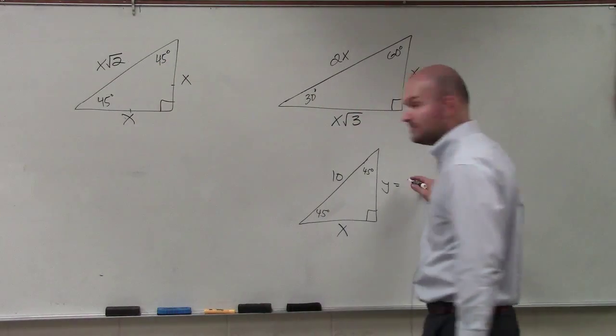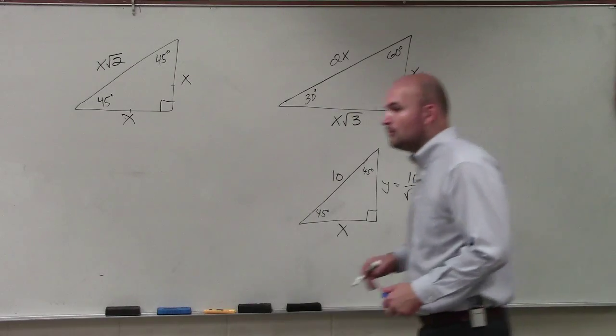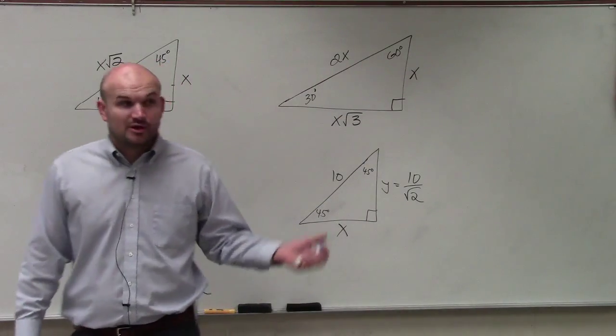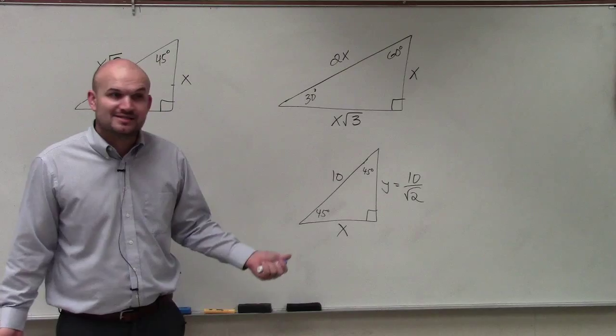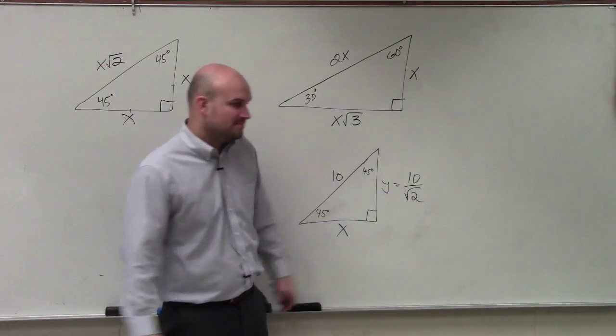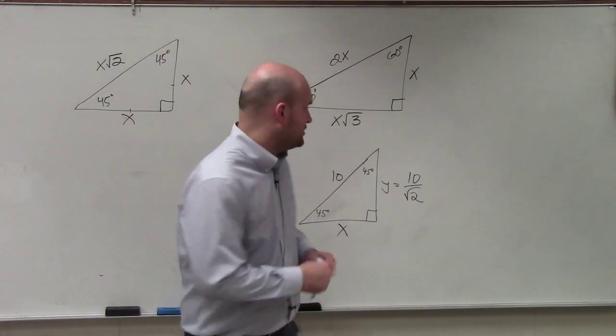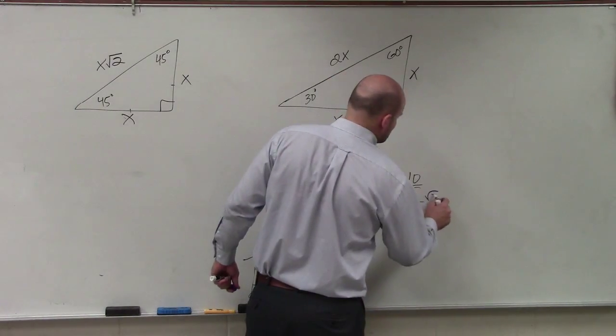I'm going to solve y here real quick, because I have a little bit more room over here. So it's 10 divided by square root of 2. Now, one process you're going to get very familiar with very quickly is rationalizing the denominator. We don't usually regard this as simplified form. So rather than leaving that square root in our denominator, we rationalize the denominator.